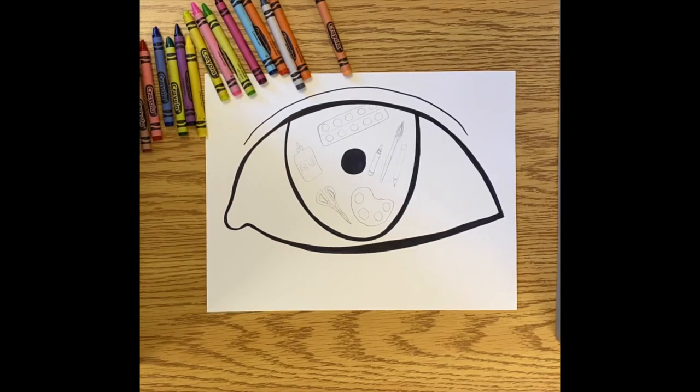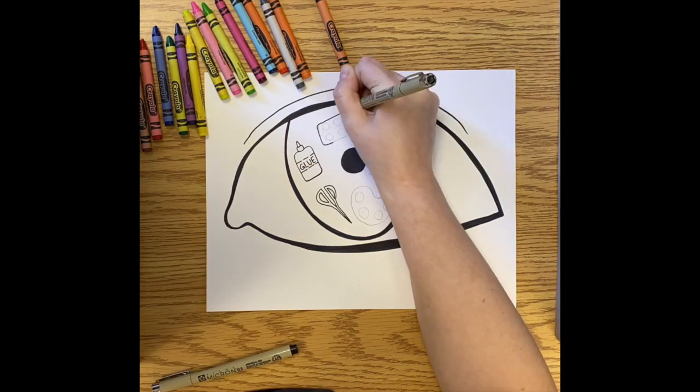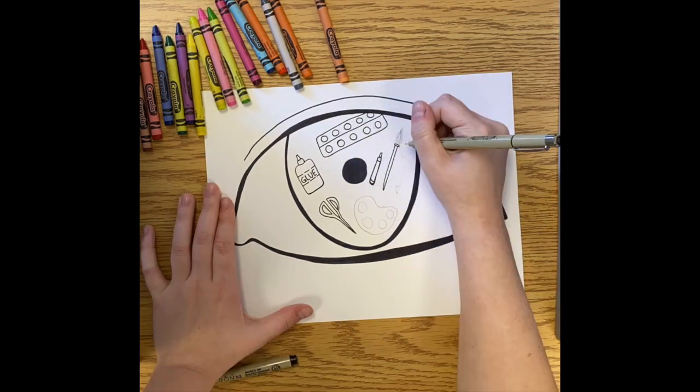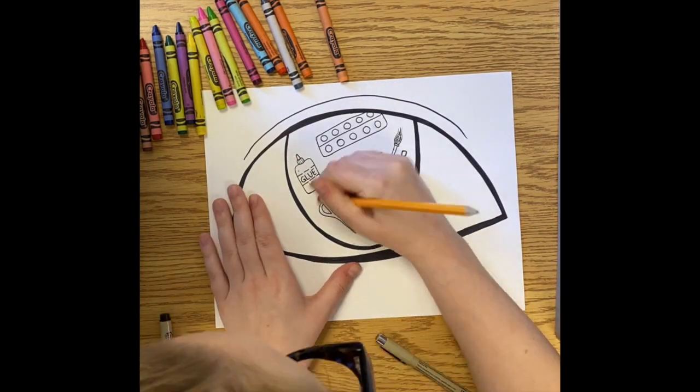Since you have everything drawn in pencil, it's time to get started coloring it. So I ended up outlining all of my items in a black pen and then used a crayon to color in each item.